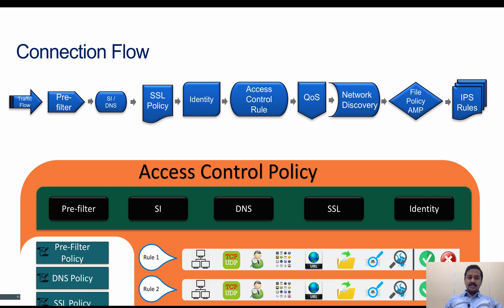If the action is set to analyze, then the traffic is passed on to the next component, which is security intelligence. If the connection is a non-DNS packet, security intelligence comes into picture and checks the source IP and destination IP reputation. Based on the reputation of the IP address, the policy is applied. If the IP reputation is good, then the traffic is sent to the next component. If the IP has a bad reputation, the traffic is dropped at the security intelligence level.